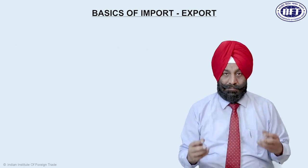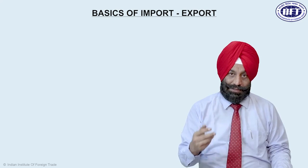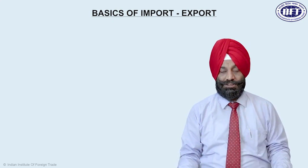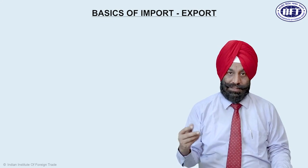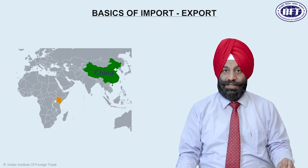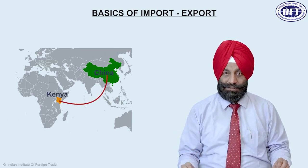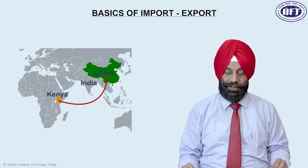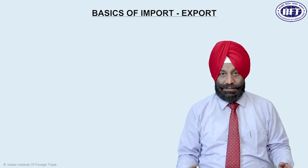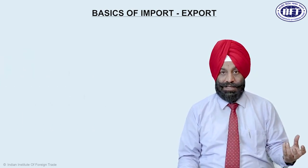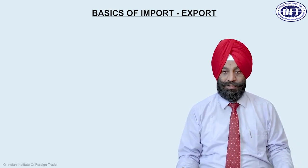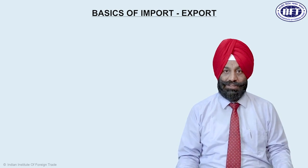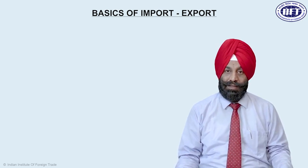Let us take an example. We source our cargo from China and sell the same cargo in Africa — let us assume Kenya. So we source it from China and sell it in Kenya without touching the territorial waters of India, without bringing the goods into India. A merchant trader buys goods from a supplier in China and sells the same goods without bringing them to India, without any value additions, to a buyer based in Kenya.